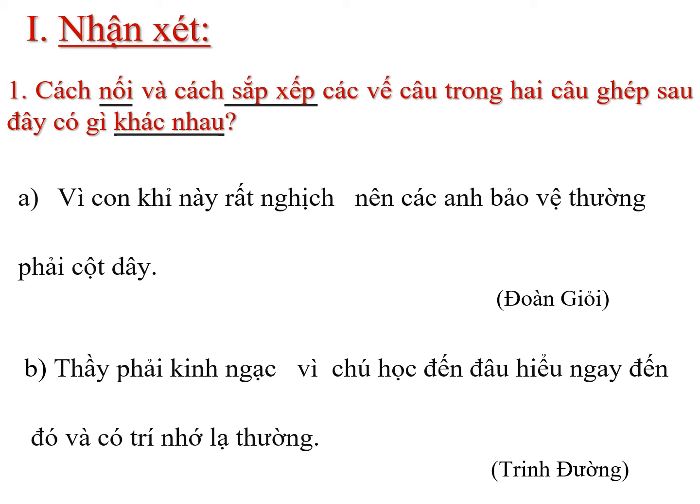Tiếp theo cô cho ta cùng đi tìm hướng giải. Ở yêu cầu số 1 này chúng ta sẽ thực hiện theo 3 bước: Bước 1, xác định các vế có trong từng câu ghép A và B. Bước 2, xác định từ nối. Bước 3, nhận xét cách nối và cách sắp xếp các vế câu có trong từng câu ghép. Các em đã học về câu ghép và biết cách xác định vế câu. Mỗi vế câu trong câu ghép thường là câu đơn thuộc 3 kiểu câu đã học, có đầy đủ chủ ngữ và vị ngữ. Vậy ta sẽ xác định được ngay vế câu ghép của câu A. Ta dùng gạch chéo để ngăn cách. Tiếp theo ta đi xác định cách nối các vế câu ghép.